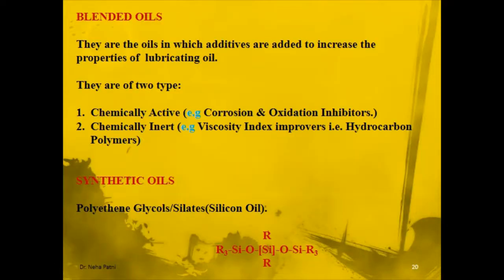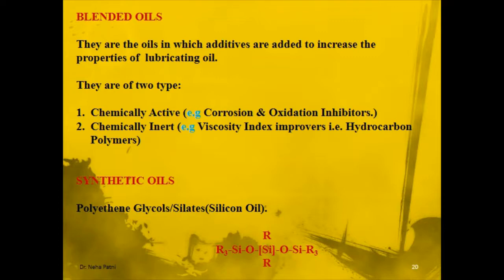The third type is blended oil. We have animal/vegetable oil and mineral oil. Animal/vegetable oils have good oiliness but are very expensive, while mineral oils are cheap but have poor oiliness. When the specifications are not met by either alone, we go for blended oil — you blend the base oil with an additive that has an added advantage. For example, taking mineral oil and blending in some animal oil gives you good oiliness at a lower cost.